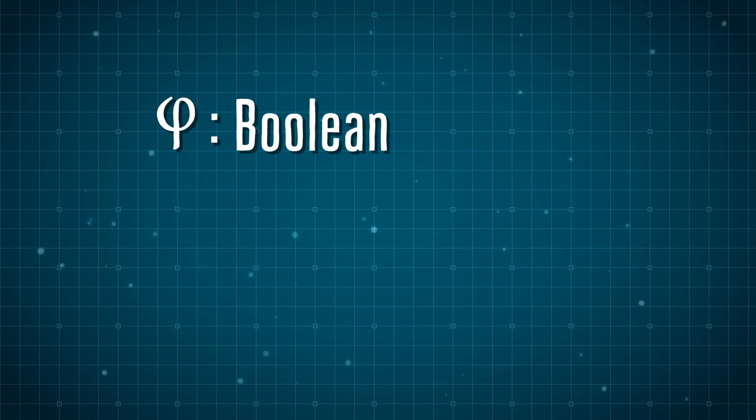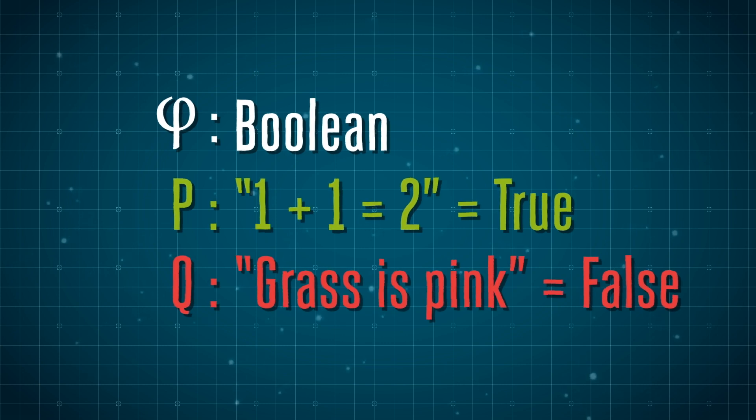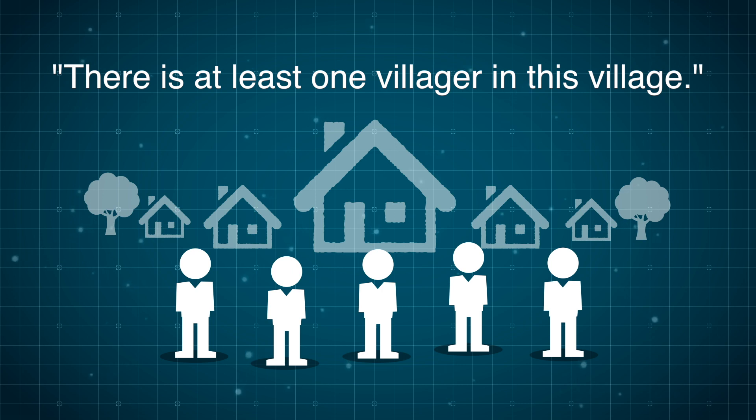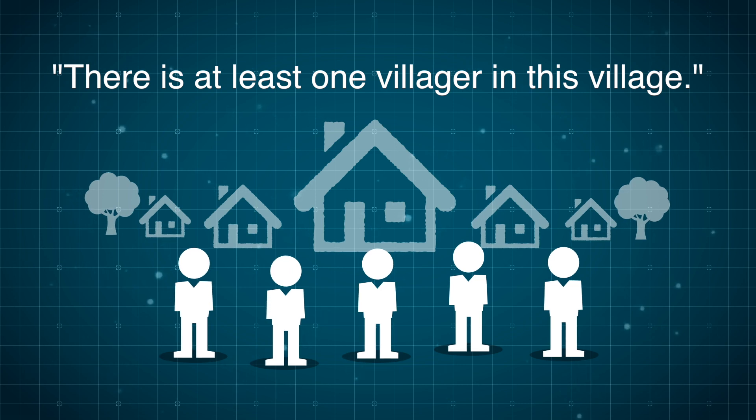There's something in math called classical logic, or more formally, propositional calculus, where statements get true or false values assigned to them. So imagine a situation with a village of people. If you know there are five villagers, then the statement 'there is at least one villager in this village' is true.